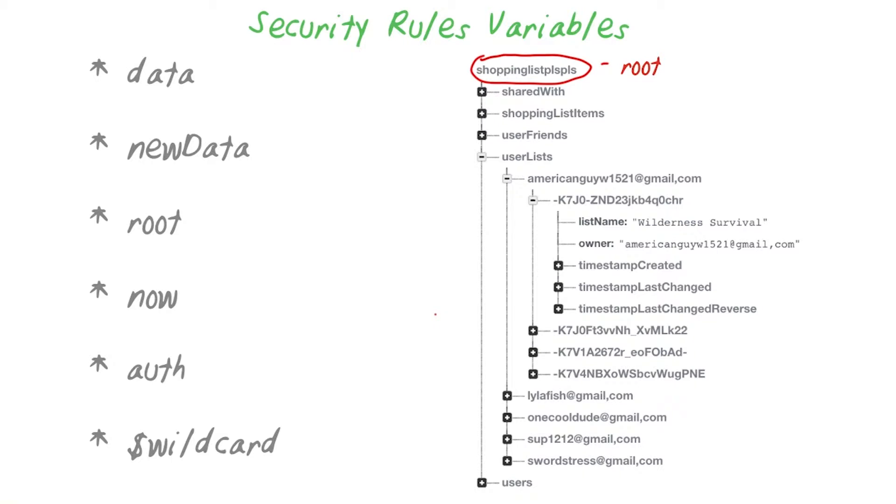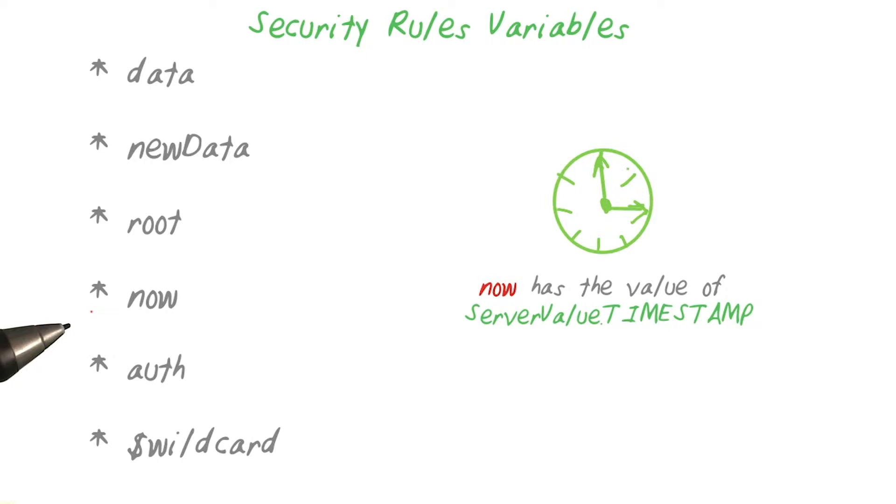Now is a variable that stores the timestamp representing the exact time on the server. You can use it to write rules to check for things like whether the timestamp is before or after the current time.